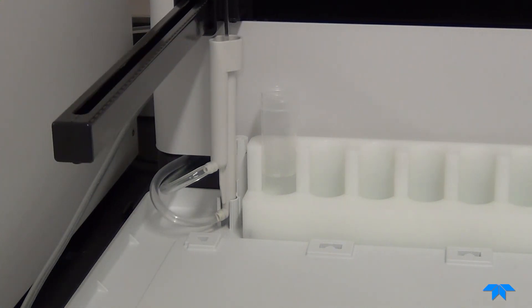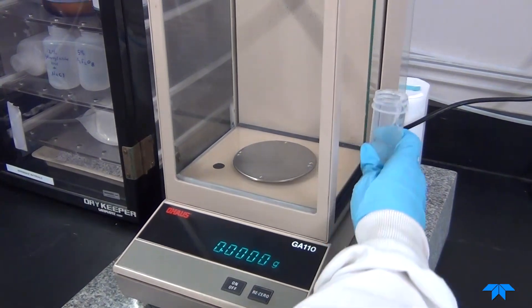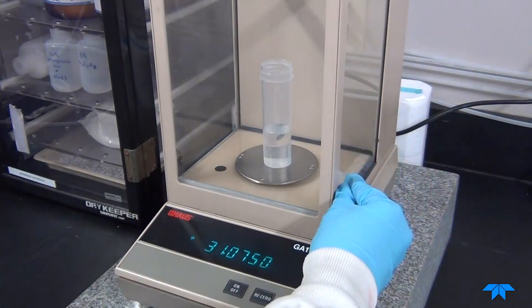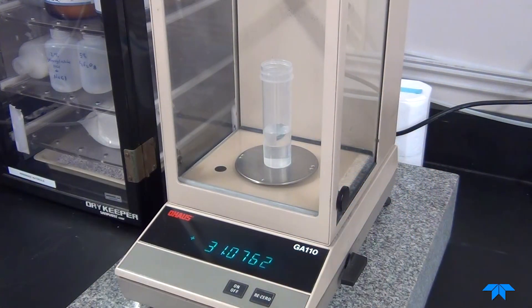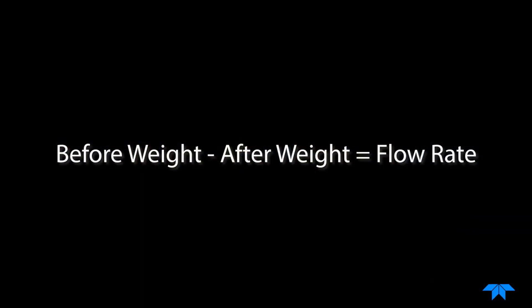Tare the balance. Then place the container on the balance, allow it to stabilize, and record the weight of the container. This is the after weight. To determine the volume uptake, subtract the after weight from the before weight.